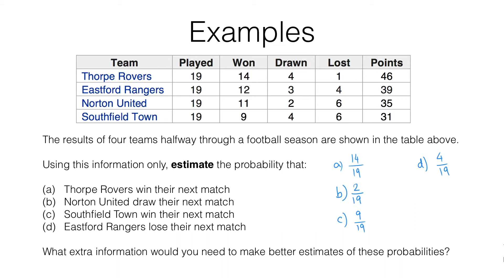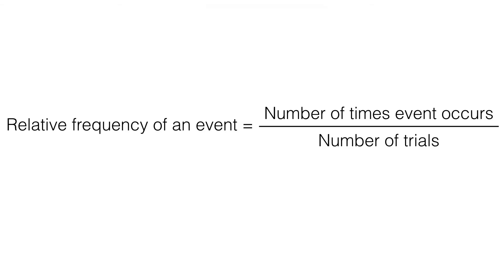Based on the information we have, the relative frequency of Thorpe Rovers winning their next match is 14/19. That's the subtle difference between relative frequency and estimated probability. Relative frequency is just based on figures you've already got, and you can use that as an estimate for probability. If you get extra information, you might have an improved estimate, but the relative frequency itself is just based on the figures given to you.